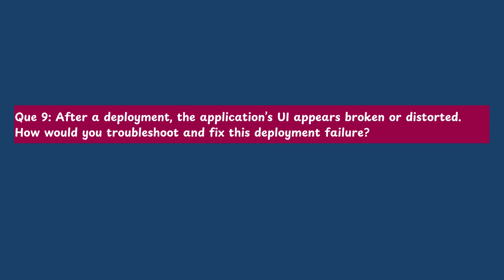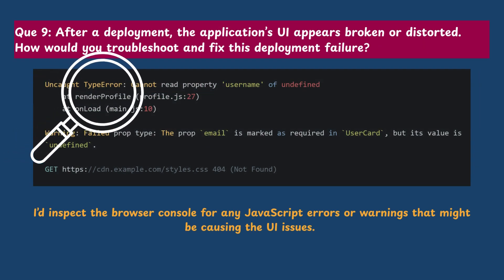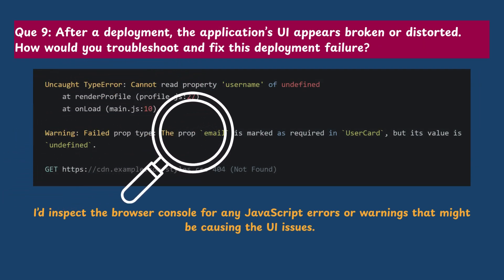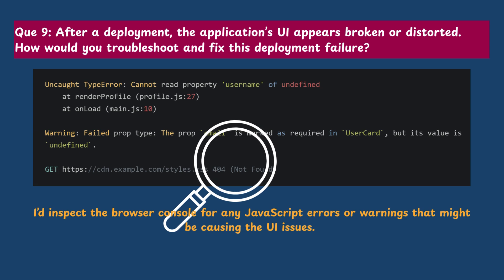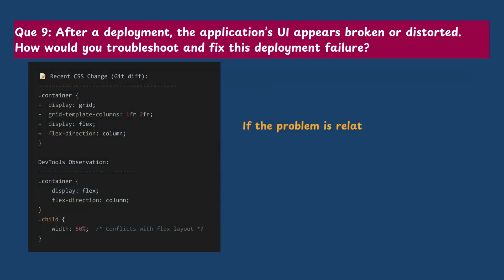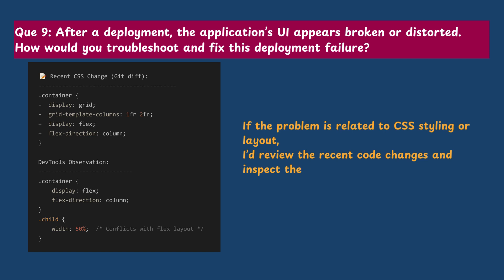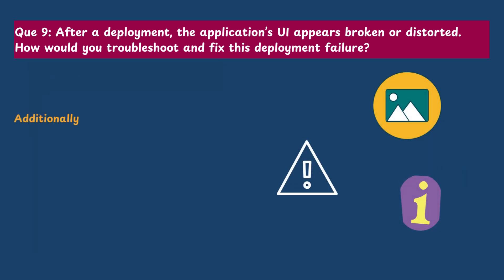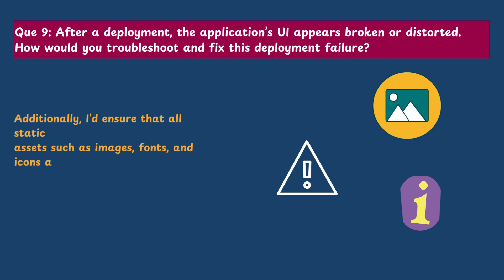Question 9: After deployment, the application's UI appears broken or distorted. How would you troubleshoot and fix this? I would inspect the browser console for any JavaScript errors or warnings that might be causing the UI issues. If the problem is related to CSS styling or layout, I would review recent code changes and inspect the application's CSS files for any conflicts or errors. Additionally, I would ensure that all static assets such as images, fonts, and icons are correctly referenced and loaded by the application.